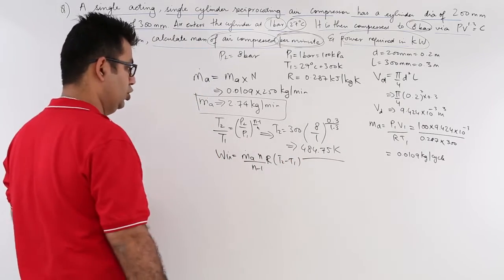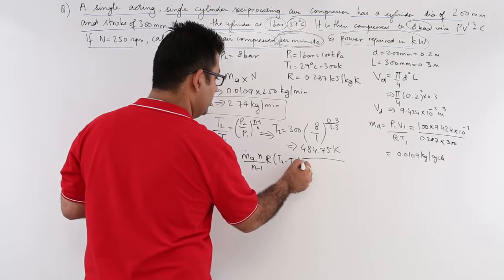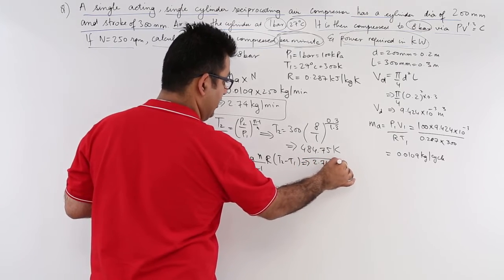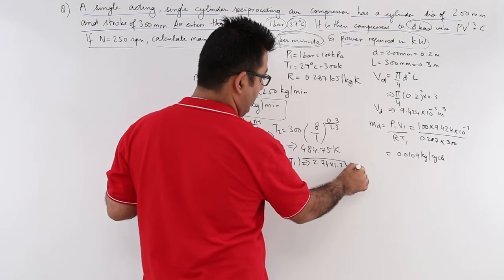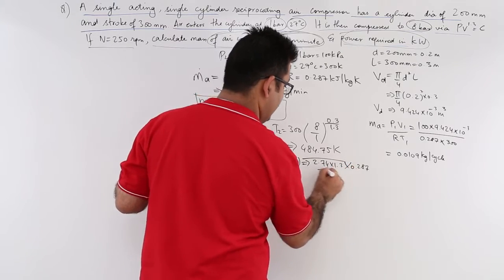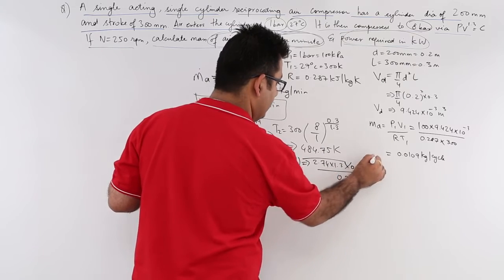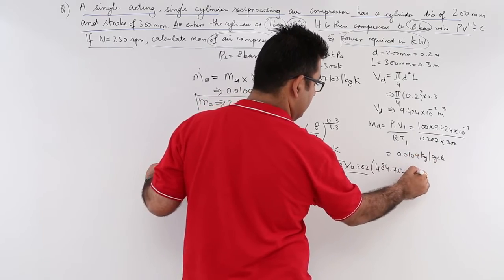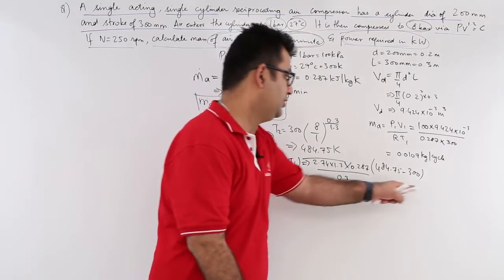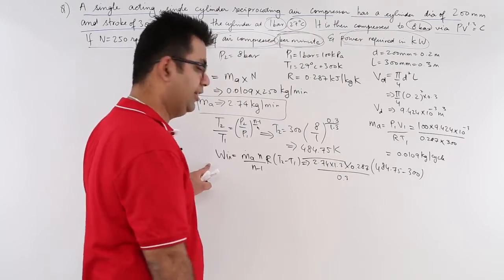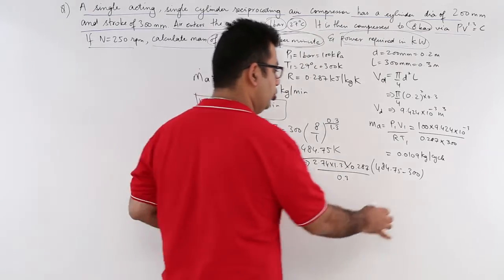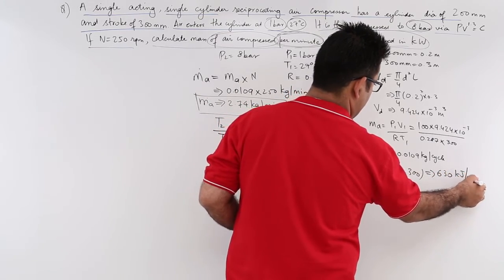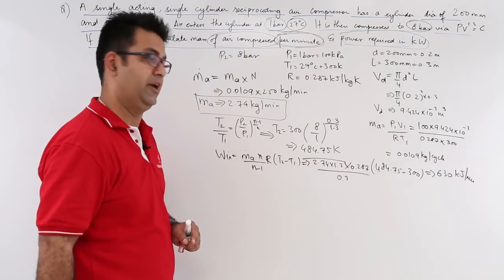So if you put in the values, you have 2.74 into 1.3 into 0.287 divided by 0.3 into 484.75 minus 300. So when you do the calculation for this part, the work input, this would be kilojoule per minute. So kilojoule per minute comes out to be almost 630.